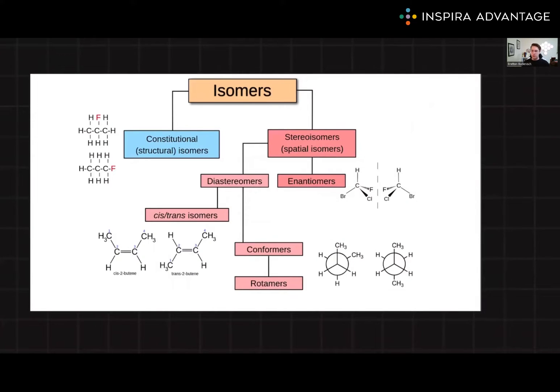Stereoisomers are molecules of the same molecular formula and connectivity, but have different spatial arrangements. They can be broadly classified into enantiomers and diastereomers. Understanding the difference between these types of stereoisomers is fundamental to mastering relative and absolute configuration.